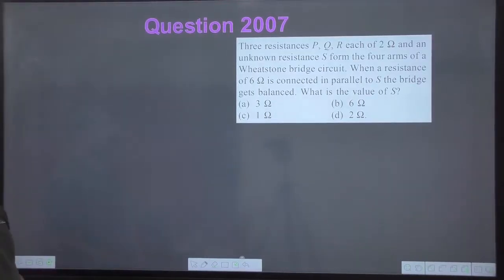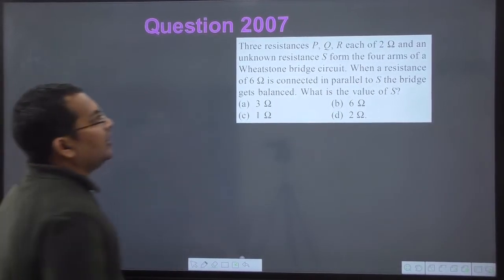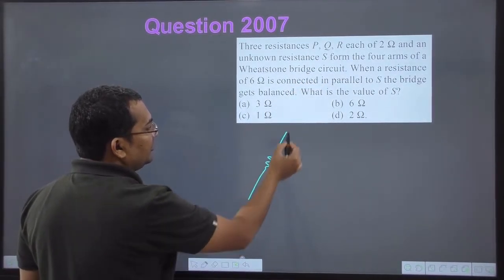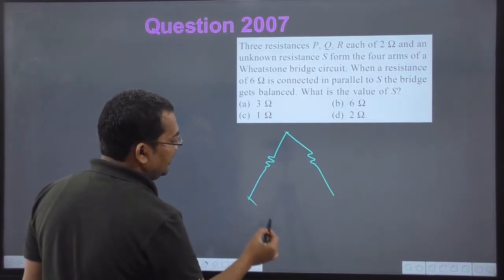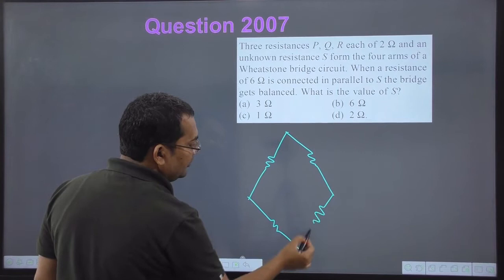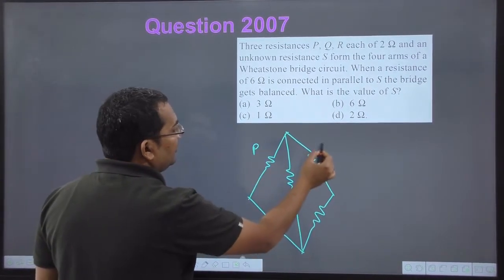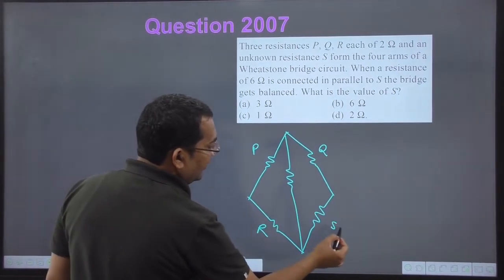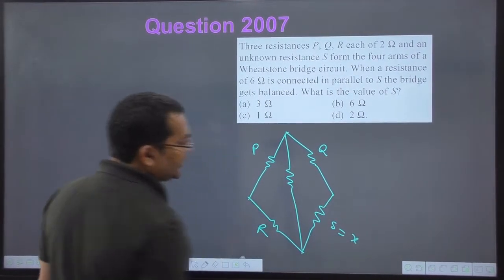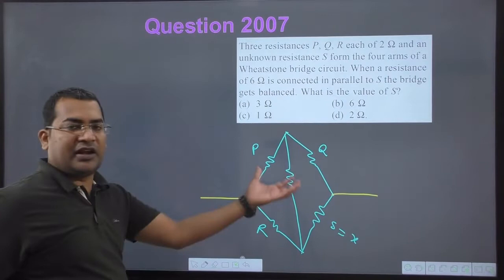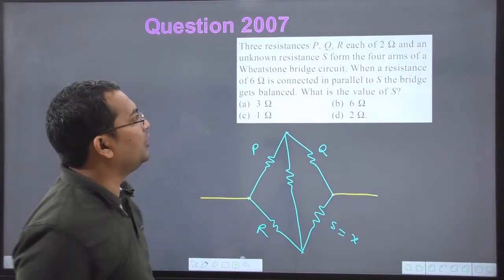Three resistances P, Q, R — each of 2 ohm — and an unknown resistance S form the four arms of a Wheatstone bridge circuit. This is the Wheatstone bridge with resistances P, Q, R, and S, where S is unknown — I'll write it as X. We will connect a battery to this Wheatstone bridge.